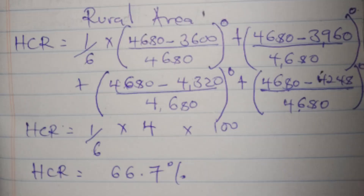We do the same thing for the rural area — we use the figures of all individuals earning below the poverty line. In the rural area, two people earn above the poverty line: those with 5,760 and 6,480, so they are not considered. Since every bracket is to the power 0, we get 1 in every bracket. Adding those ones gives 4, so the head count ratio is 1 over 6, times 4, times 100, which equals 66.7%. The interpretation is: out of every 100 people in the rural area, 66.7 live below the poverty line.